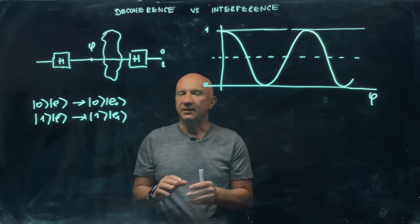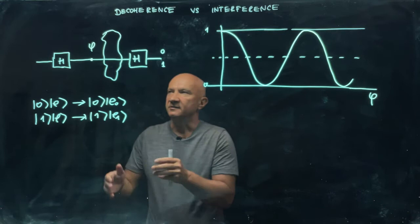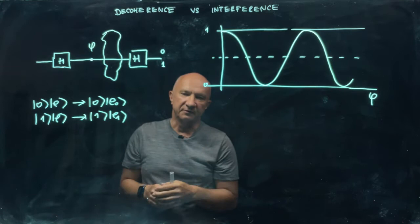So for this, let's go back to our golden circuit. So the single qubit interference, the Hadamard phase, Hadamard. But as you can see, I introduce an extra feature here. So I will assume that in between the Hadamard gates, the qubit will interact with the environment.